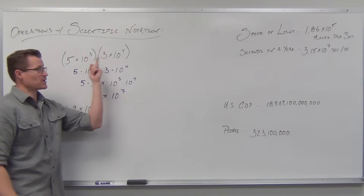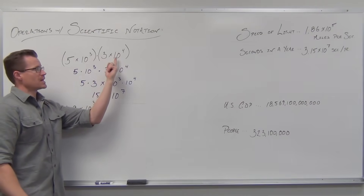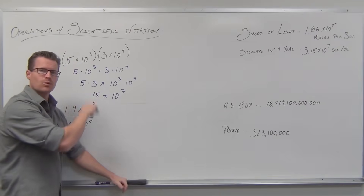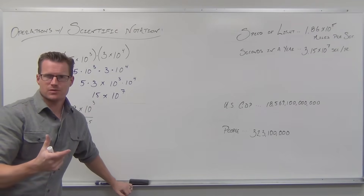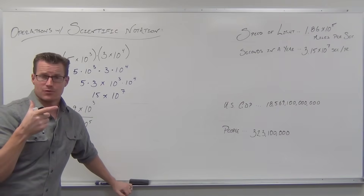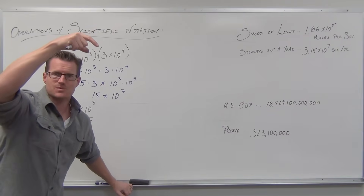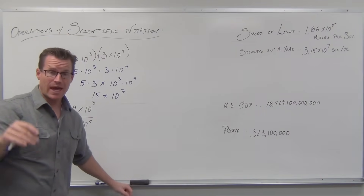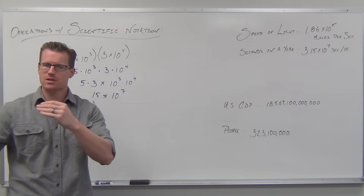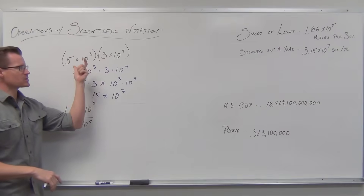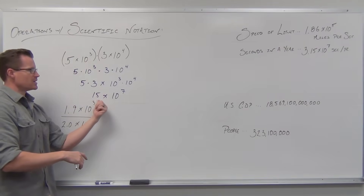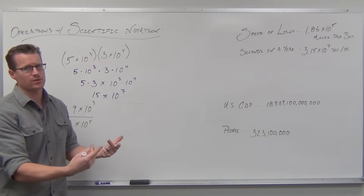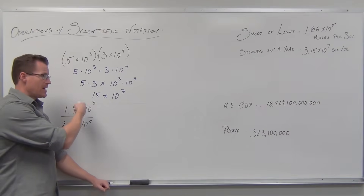So 5 times 3 is 15, and 10 to the third times 10 to the fourth — I see multiplication, so I add — gives 10 to the seventh. That's exactly what we get. All we have to do to use scientific notation operationally when multiplying: multiply the numbers and add the exponents. That's what we do the entire time. What we do with the exponents is one level below what we see. What we do with the coefficients — you just multiply.